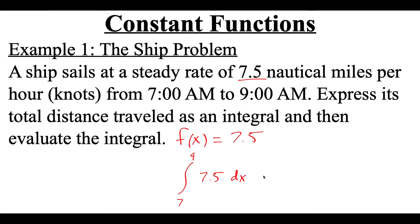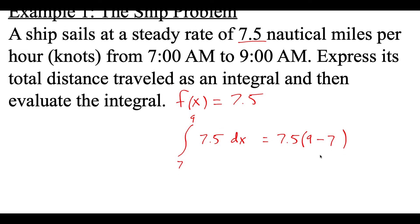Now what we said we can do when we're integrating a constant function is take whatever that constant value is and multiply that by the difference of the upper value minus the lower value. If I take 9 minus 7, that's just 2, and then if I take 7.5 and multiply that by 2, I'm going to get 15. So this ship has traveled 15 nautical miles.